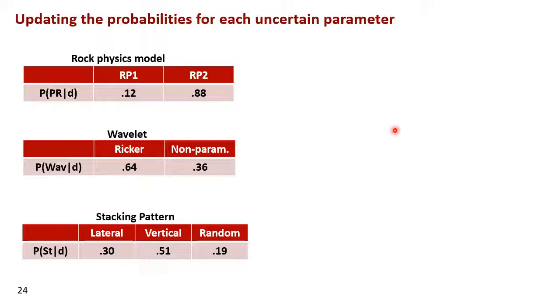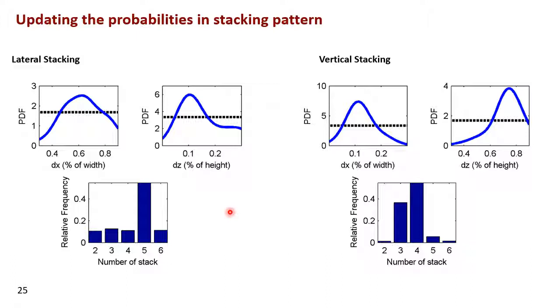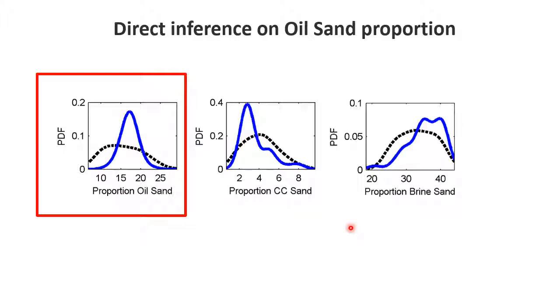We can then update the probabilities as before. We have, remember, two rock physics models. So it turns out that the second rock physics model with four lithologies is required and not necessarily the first model. In terms of the stacking pattern, we see that random is probably become less likely and vertical has become more likely. And so with the other parameters. Here's some more parameters, the lateral stacking and vertical stacking, we have different widths and heights. So you can see that all these are posterior distributions. And this is the prior distribution. So we get all the updating in those parameters.